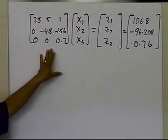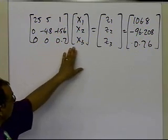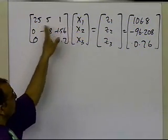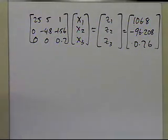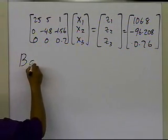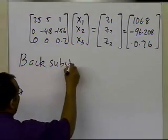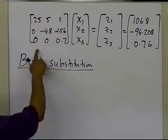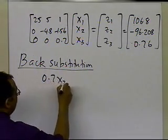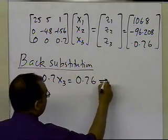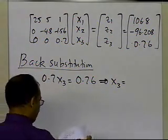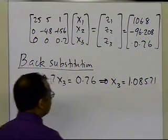We use back substitution starting from the last equation. The last equation has only one unknown X3, the second last only X2, and the first only X1. Taking the last equation: 0.7 times X3 equals 0.76, which gives X3 equals 1.08571.